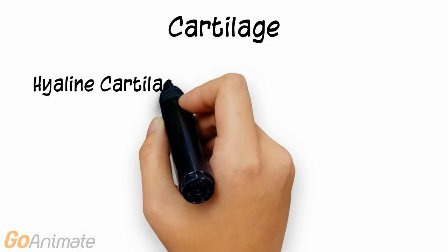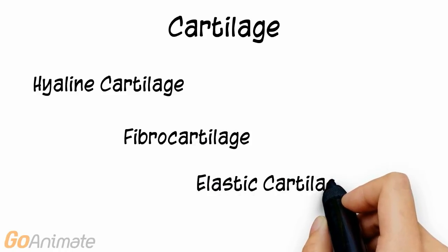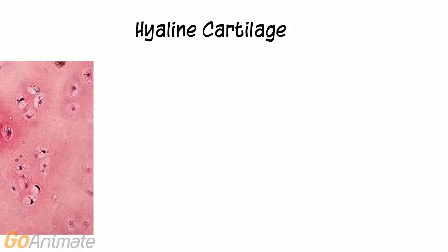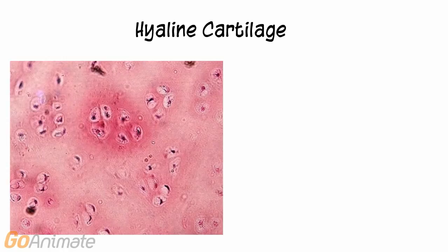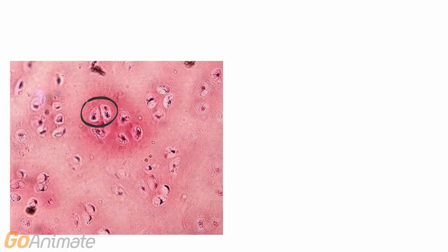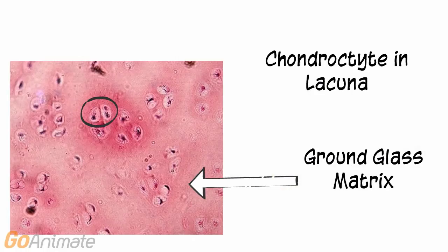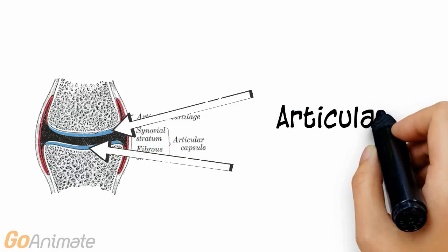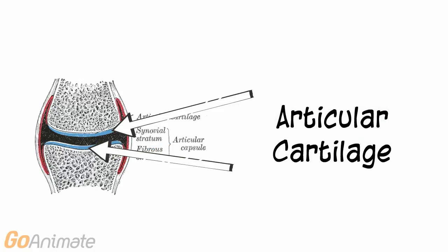There are three types of cartilage: hyaline cartilage, fibrocartilage, and elastic cartilage. Hyaline cartilage has a distinctive appearance. It consists of cells called chondrocytes with a hollow chamber around them called the lacuna. The matrix has a ground glass appearance and contains chondroitin sulfate and collagen. Hyaline cartilage is found at the ends of bones as articular cartilage and in the larynx, trachea, and bronchi.